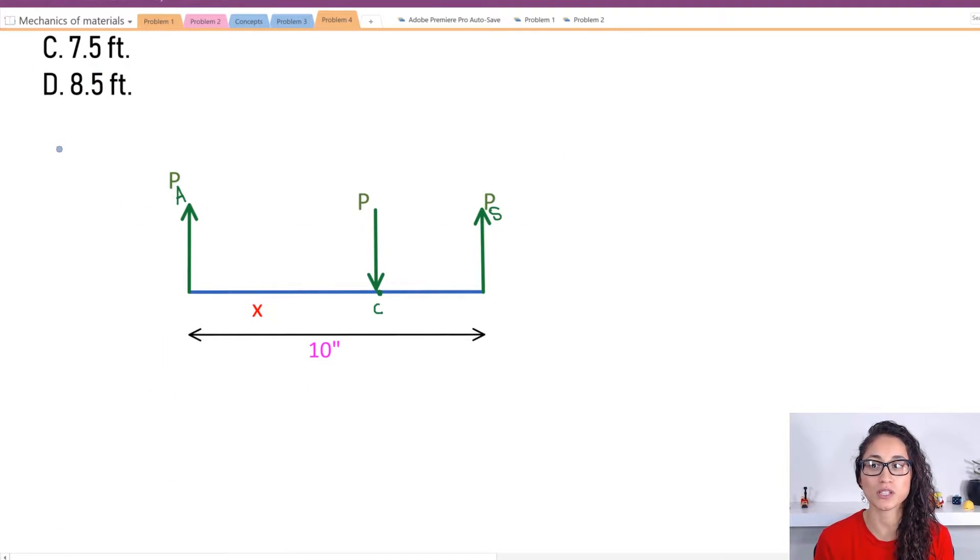So the first thing to do is really draw the free body diagram. So this is our free body diagram. Here I have tension because I have two cables or two rods, we have aluminum and we have steel, and then here we have the force. This is the distance we're looking for from here to here and then this is 10 inches.